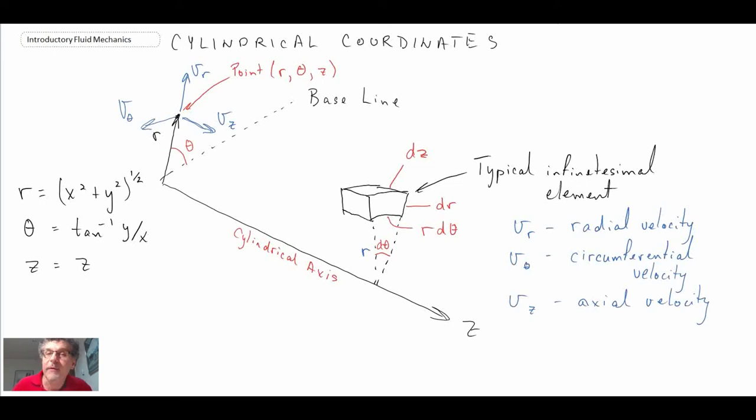So those are the velocity components as well as the coordinate transformation. With this, what we can do, we can rewrite our continuity equation. And in order to do that, what you need to know is the divergence operator in cylindrical coordinates, sometimes also called polar coordinates.